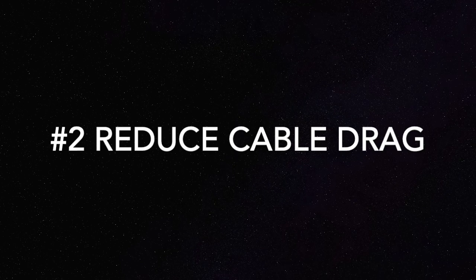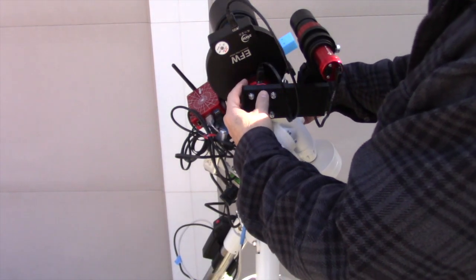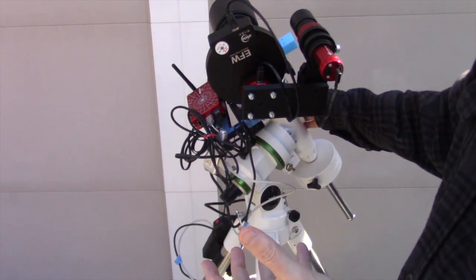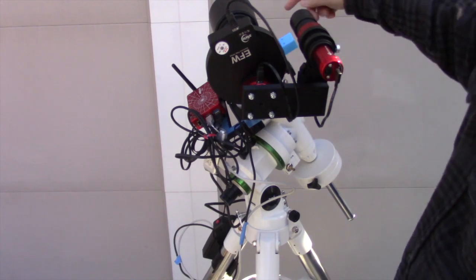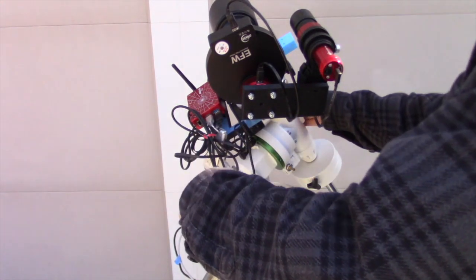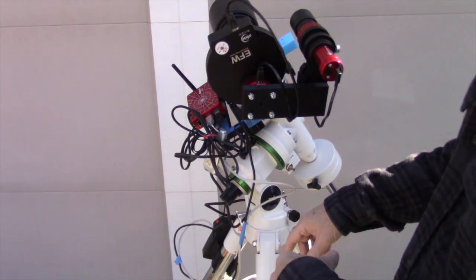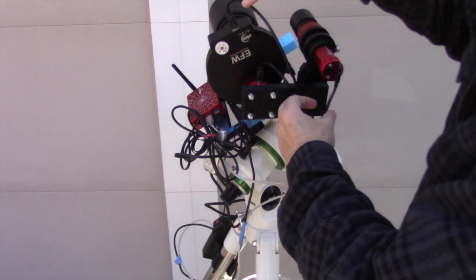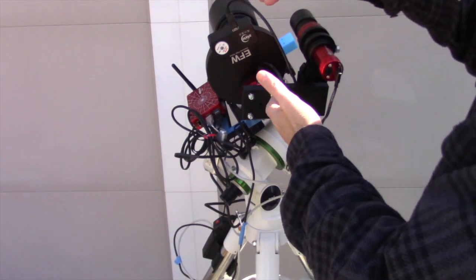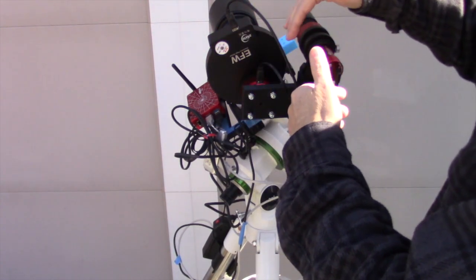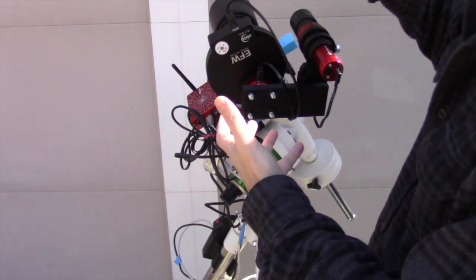Tip number two, reduce cable drag. Now another issue that you might have is going to be with cable drag. And so before I had this ASI-R mounted up high, I actually just put it down below on the tray. And what that did is that had at least four cables coming up from the bottom. There was one for the filter wheel and the guide camera and the main camera and also for the power.